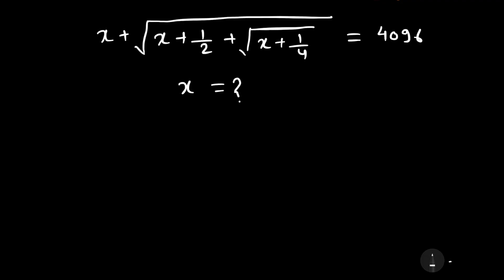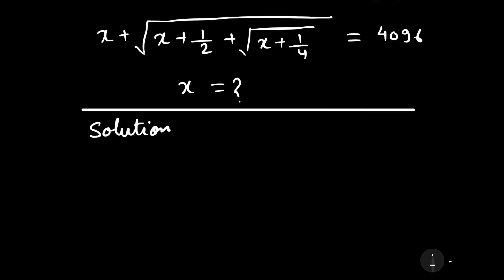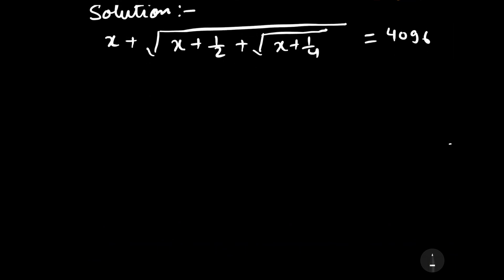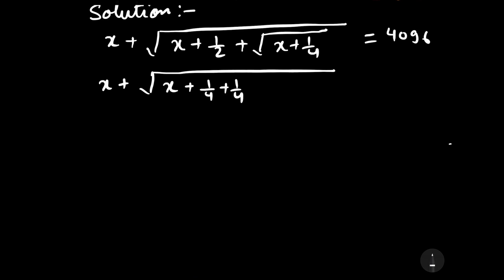Now let us start to solve this question. Our question is x plus under root x plus 1 by 2, plus under root x plus 1 by 4, equal to 4096. Let us rearrange some terms. x plus under root x plus 1 by 2 can be written as 1 by 4 plus 1 by 4 plus under root x plus 1 by 4, plus 1 by 4, which can be written as 2 into 1 by 2 under root x plus 1 by 4, equal to 4096.